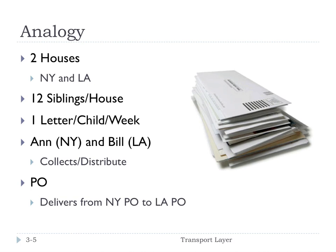In the book, the authors have an analogy about two houses in New York and Los Angeles, with 12 siblings in each house. Every child sends one letter a week to a child in the other house. Ann in New York collects the letters, takes them to the post office, and distributes received letters to her siblings. Bill does the same in Los Angeles.